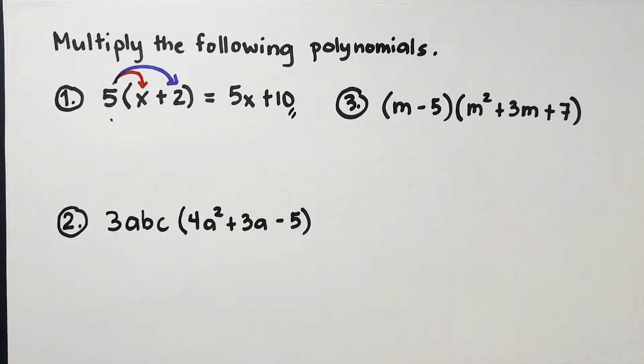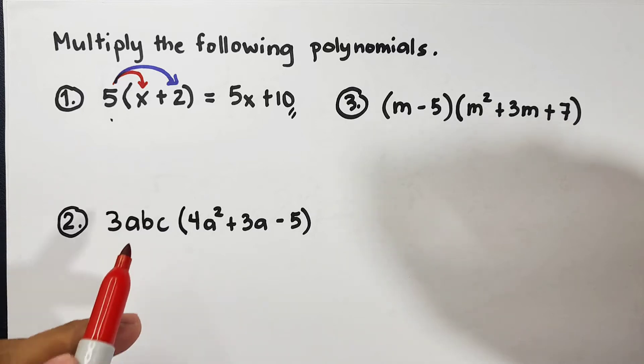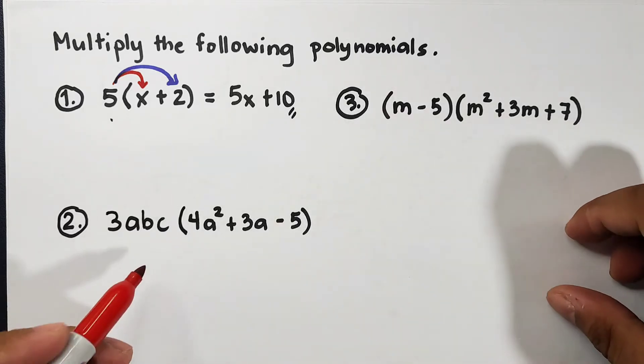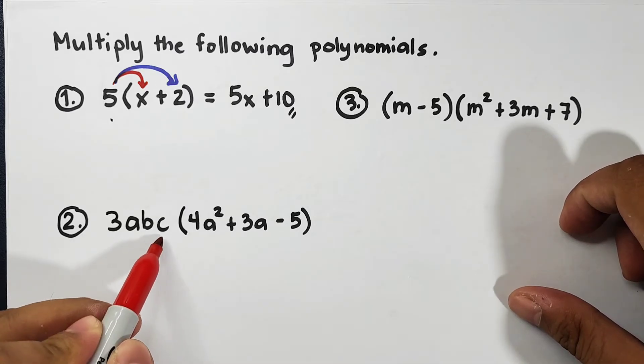So let's review: 5 times x, that is 5x, and 5 times 2, that is 10. So the answer for item number one is simply 5x plus 10. Let's move on with item number two. For number two we are using here abc as our variable.